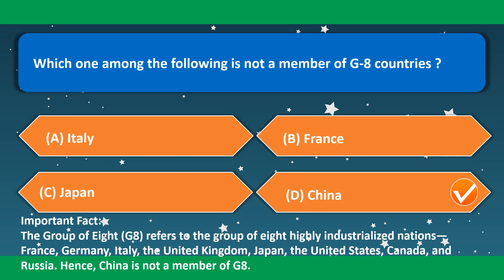Which one among the following is not a member of G8 countries? The correct option is China — option D. The Group of 8 refers to 8 highly industrialized nations: France, Germany, Italy, the United Kingdom, Japan, the United States, Canada and Russia. Hence China is not a member of G8.